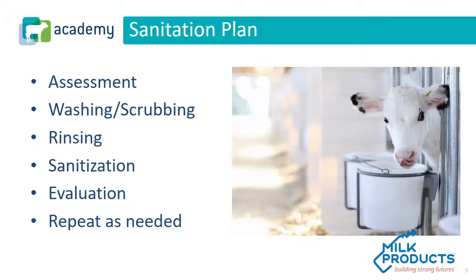To do an effective job, we need to have a plan. The sanitation plan has six different components. First, we have to assess what types of issues we're dealing with, what types of organisms. The next part is washing and scrubbing. Third is rinsing. Then we get into sanitation. Then we have to decide how well we did — that's an evaluation. And from that point, we decide what we need to repeat based on our evaluation.